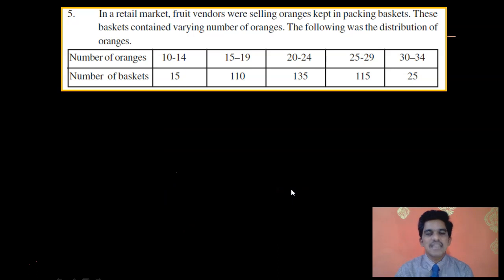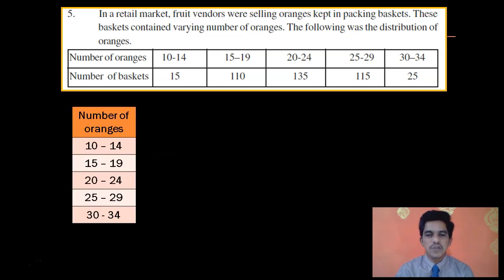We will take an example. Here we have: In a retail market, fruit vendors were selling oranges kept in packing baskets. These baskets contained varying number of oranges. The following was distribution of oranges. The first column is number of oranges: 10 to 14, 15 to 19, 20 to 24, 25 to 29, 30 to 34. Actually, these are inclusive classes.